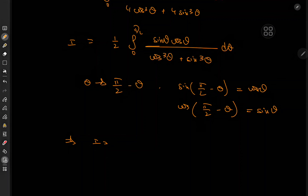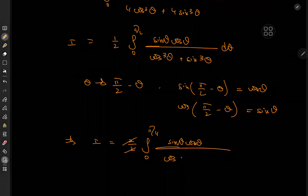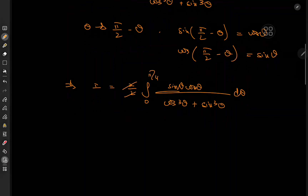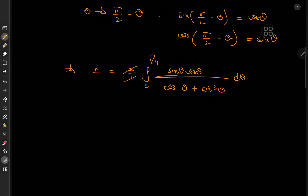This symmetry implies that I can be written as twice the integral from zero to π/4, and since there's already a factor of one half, those cancel, giving the integral from zero to π/4 of sinθ·cosθ over cos³θ + sin³θ dθ. The resulting structure is interesting — at first instinct you might guess a Weierstrass substitution, but I have a different approach, quite similar to how I solved the antiderivative for the square root of tan(θ).